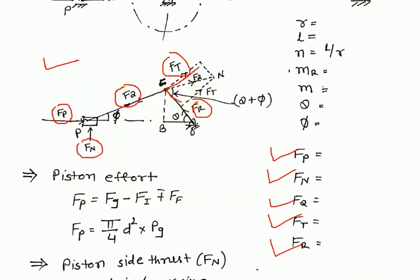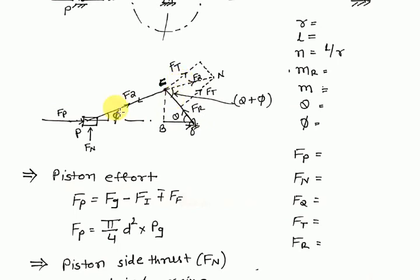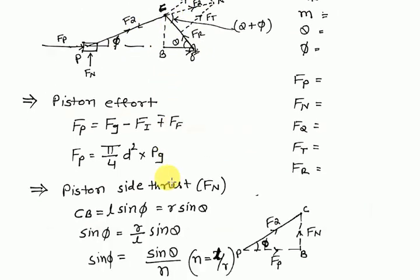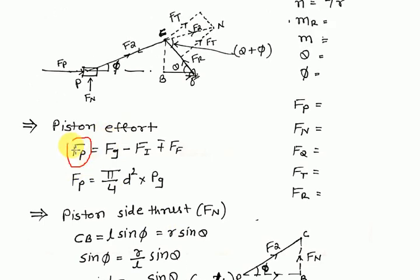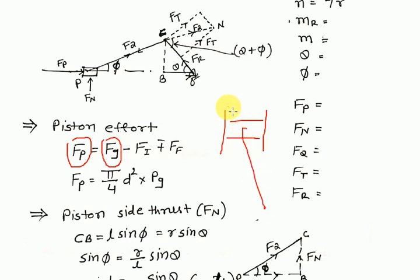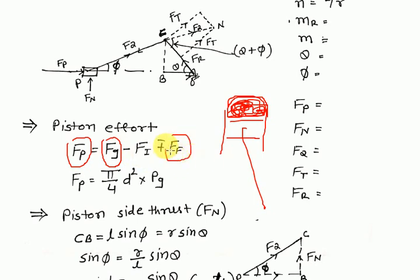You should pause the video and draw this figure clearly so you can understand it easily later. Now, piston effort: fp is equal to fg (gas force) minus fi (inertia force) plus ff (frictional force). After combustion, whatever force is generated inside the cylinder is called the gas force fg.